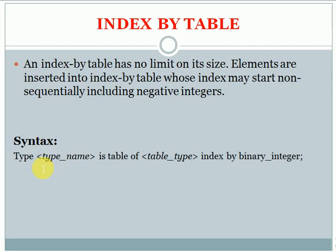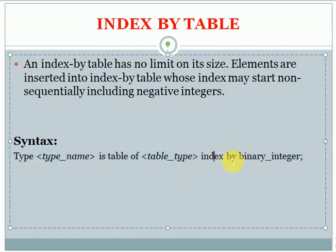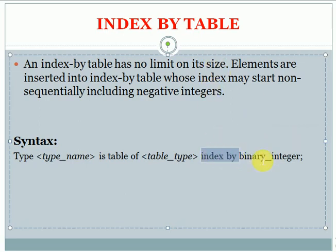Looking at the syntax for indexed by table: TYPE type_name IS TABLE OF data_type INDEX BY type. Here, INDEX BY is a keyword. The index type may be BINARY_INTEGER, PLS_INTEGER, NUMBER, INTEGER, or whatever you are going to use — you can declare that.